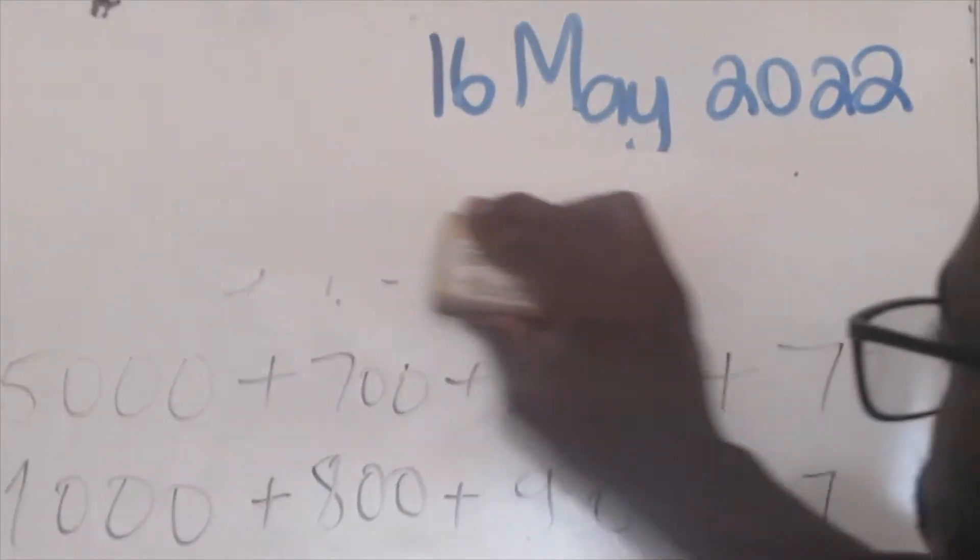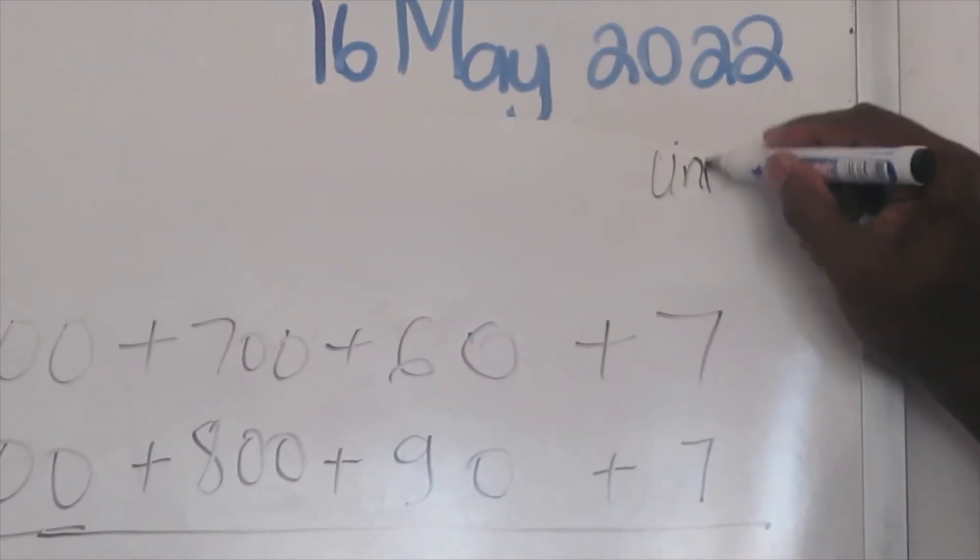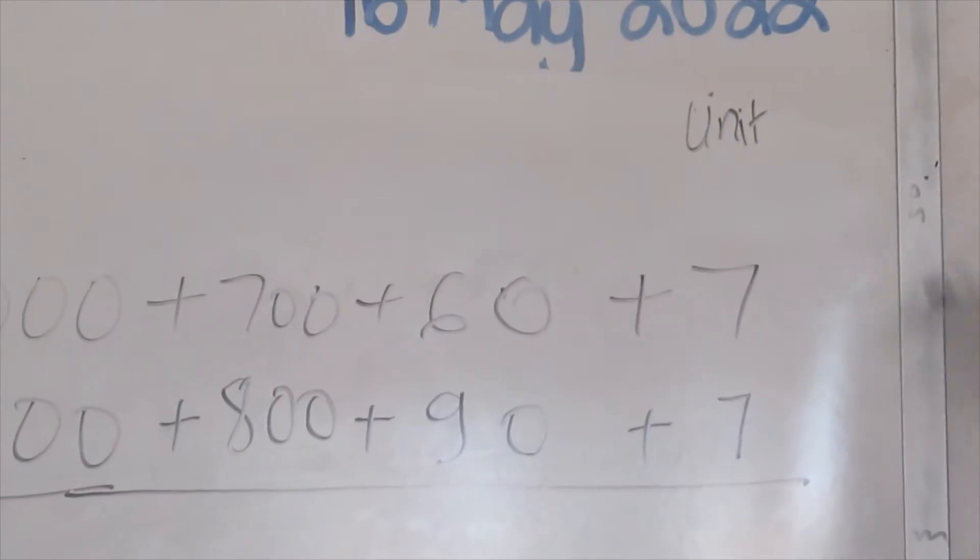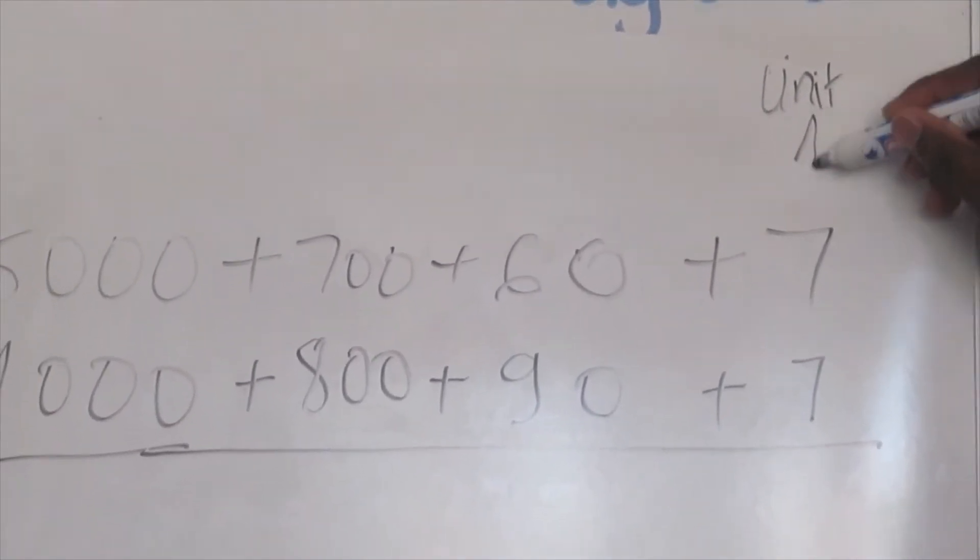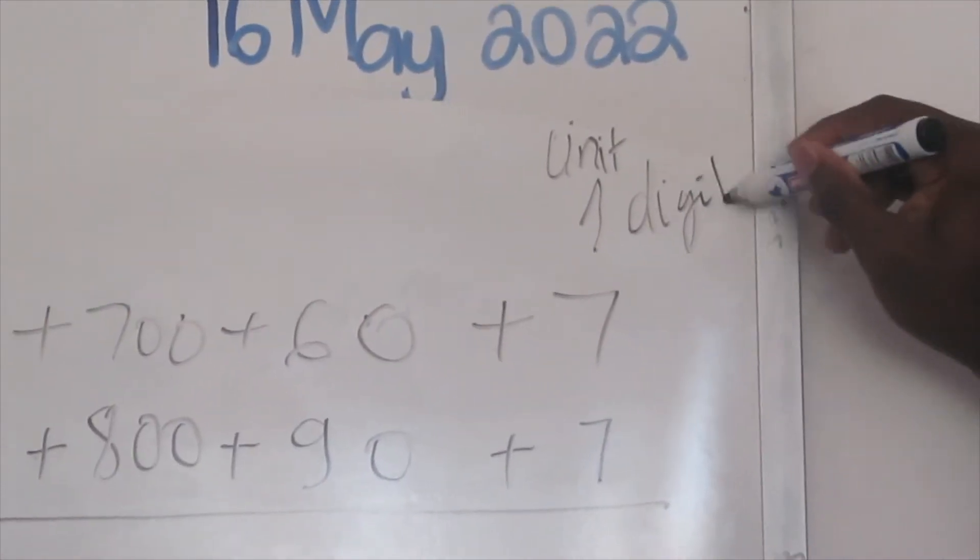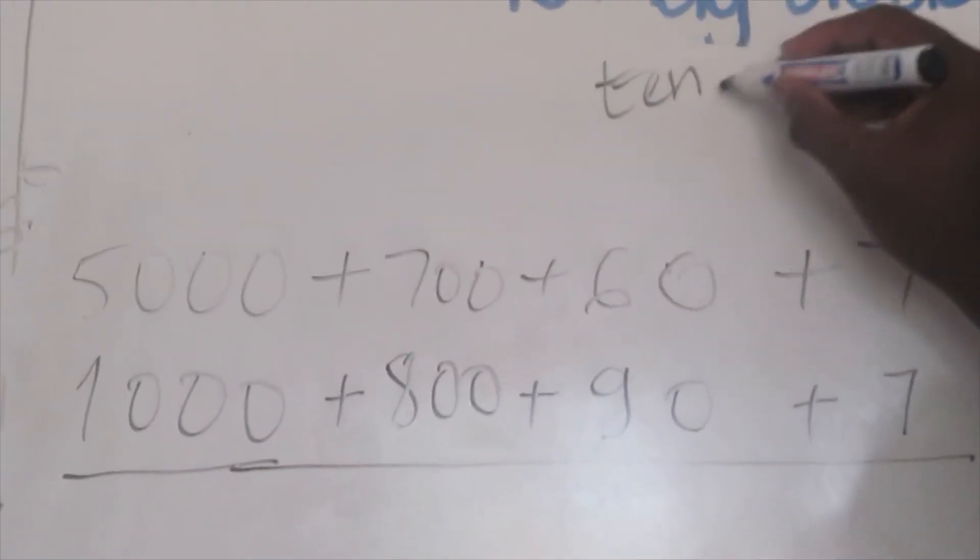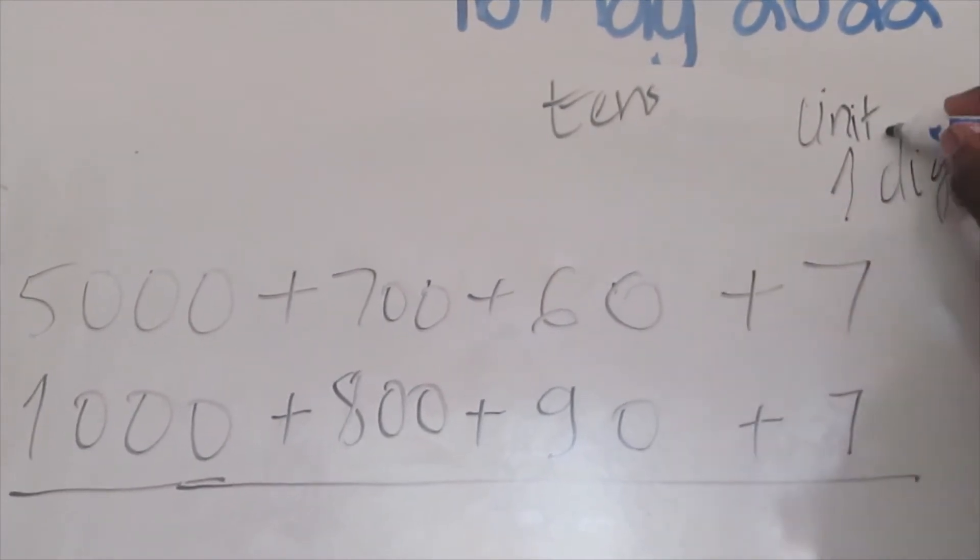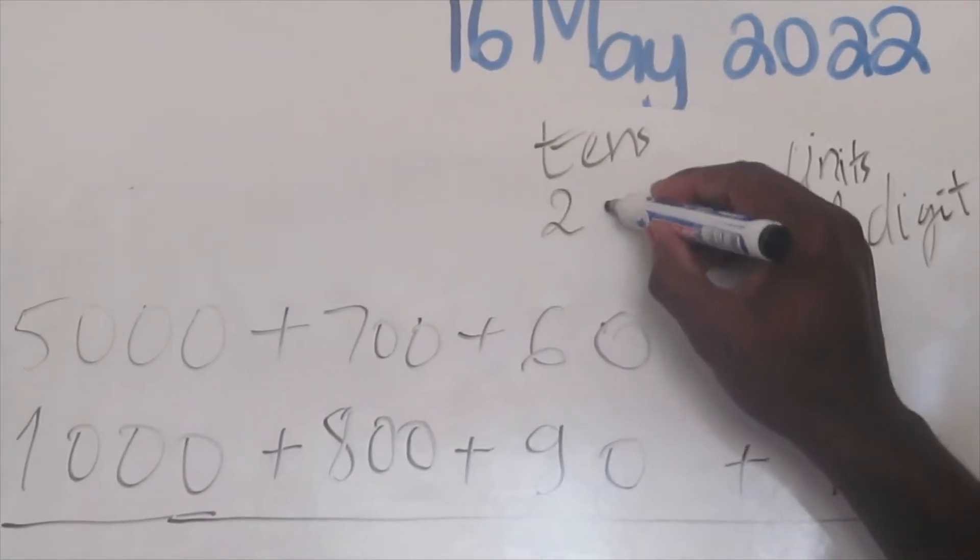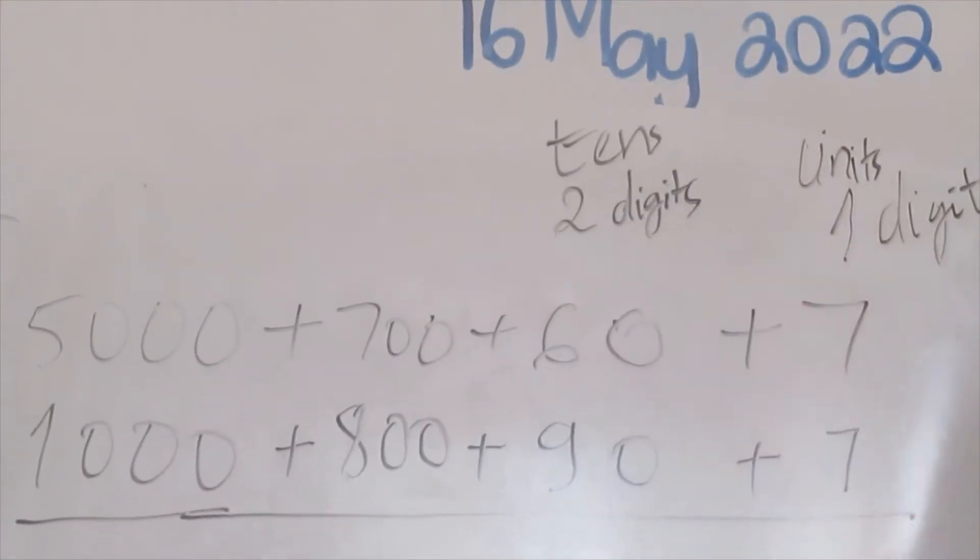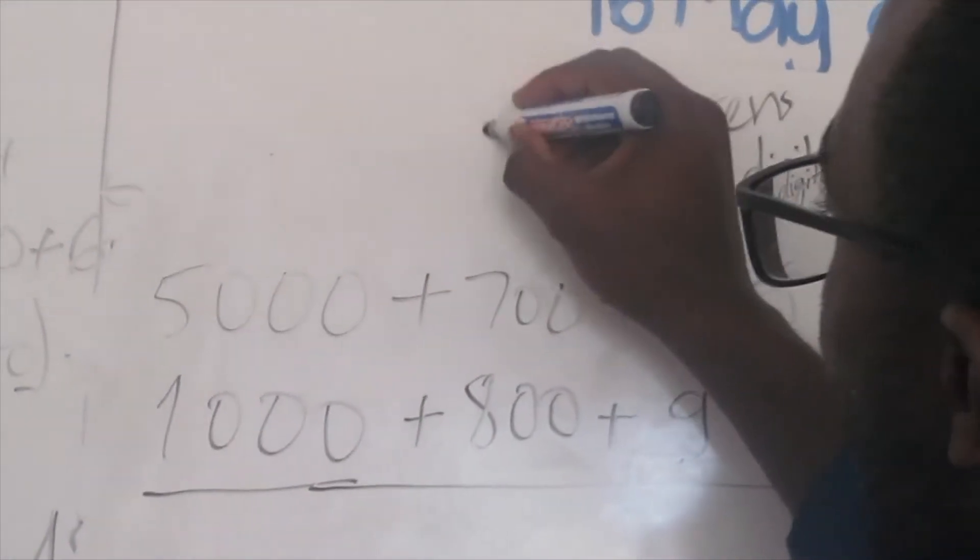I will show something here. We have first the units column or line. In this line, you will always get only one digit. The second line here is the tens line, so on the tens line here you will always get two digits, not three digits.